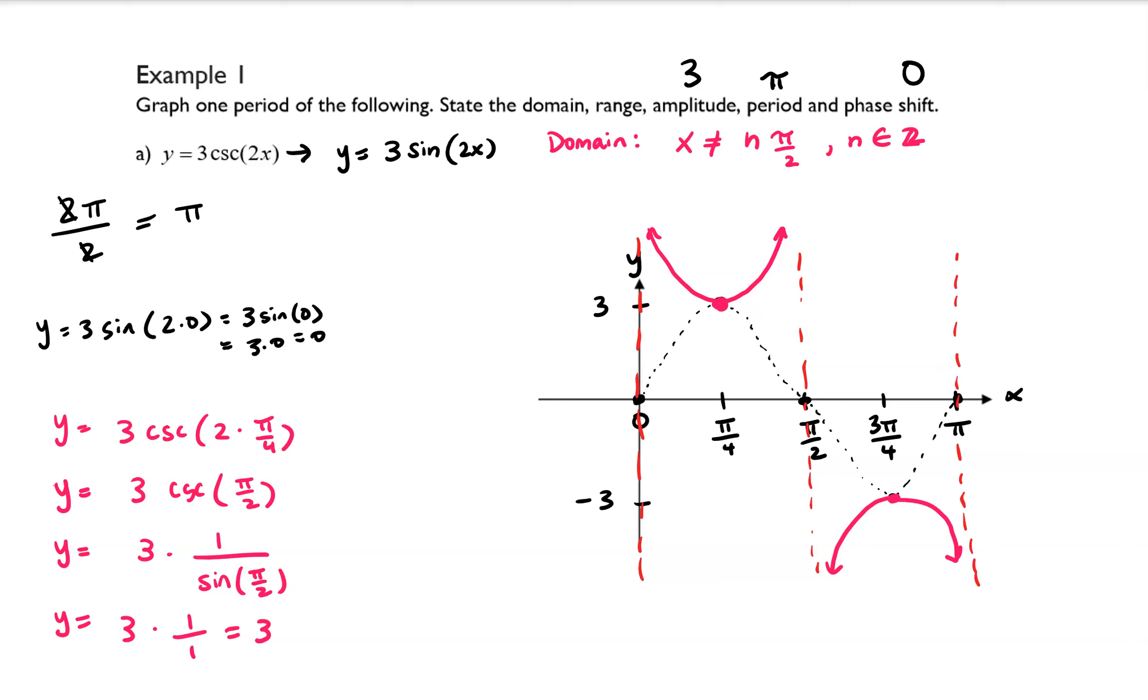If you wanted to write it in a sentence, you could say all real numbers except integer multiples of pi over 2. So that's just another way of stating the domain.